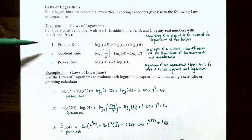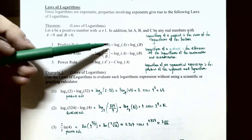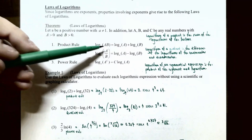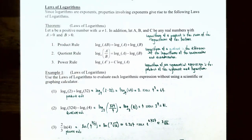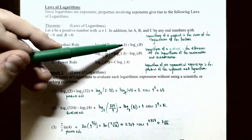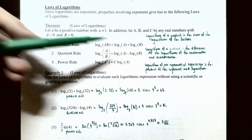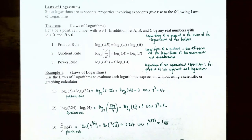Number one, the product rule states that log base a of A times B — notice that inside the argument you have a product, A times B, two factors multiplied together. You can write this logarithm of a product into a sum of logarithms with the same base: log base a of A plus log base a of B. The logarithm of a product is the sum of the logarithms of the factors.